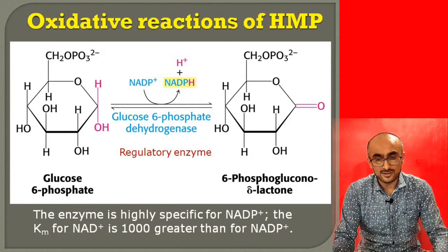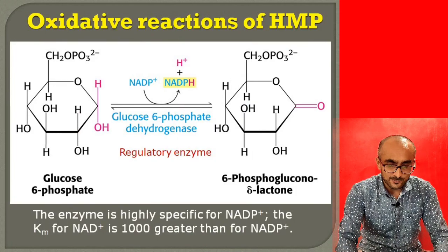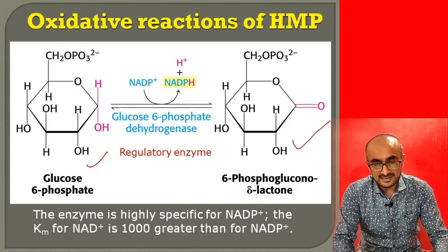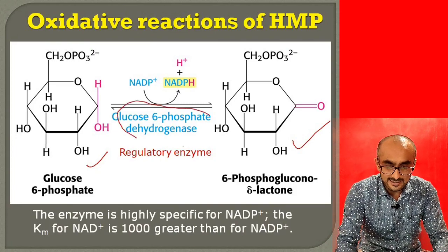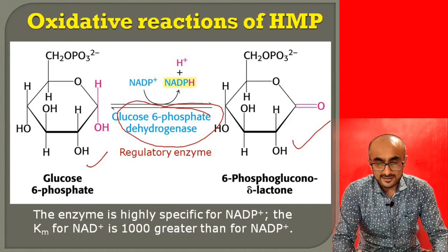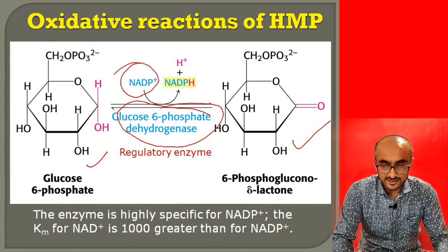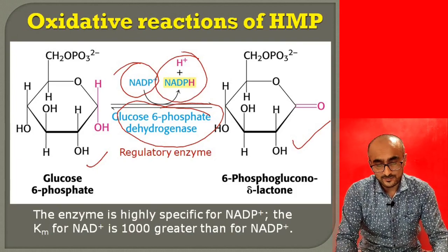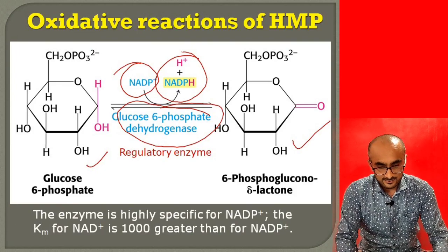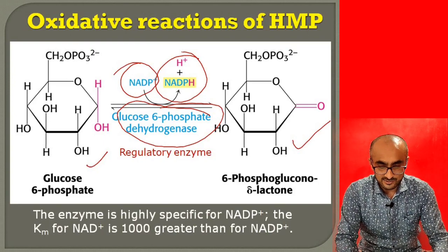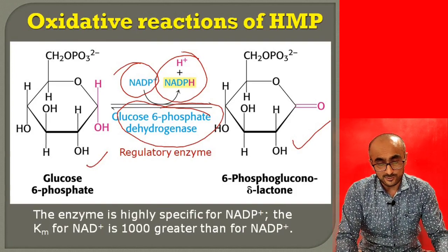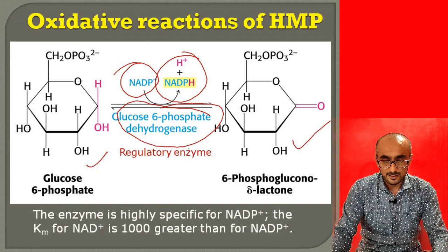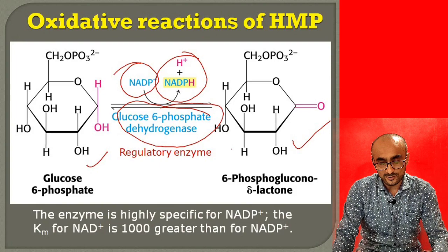In the first reaction of the oxidative phase, glucose-6-phosphate is oxidized into 6-phosphogluconolactone, catalyzed by glucose-6-phosphate dehydrogenase, which is the regulatory enzyme of this pathway. In this reaction, one molecule of NADP+ is reduced to NADPH and H+. This enzyme is highly selective for NADP+; the Km value for NAD+ is 1000 times greater than for NADP+. The activity of this enzyme is regulated by the concentration of NADPH in the cell.